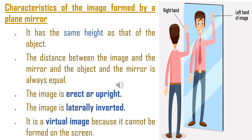I hope you understood all five characteristics of the image formed by the plane mirror. First, it is a virtual and erect image. Second, the height of the image is the same as the height of the object. Third, the distance between the object and the mirror equals the distance between the image and the mirror. And fifth, lateral inversion. I hope you understood the concept of characteristics of the image formed by a plane mirror. Thank you.